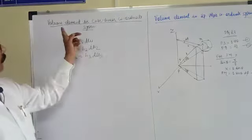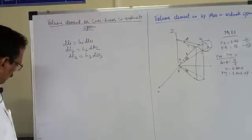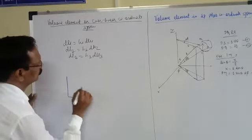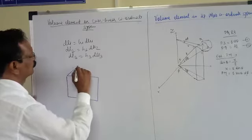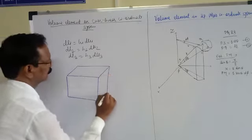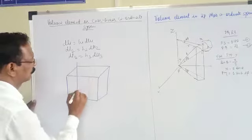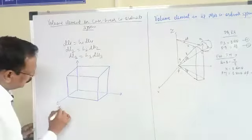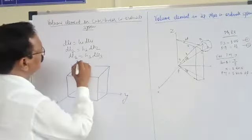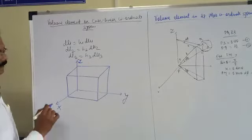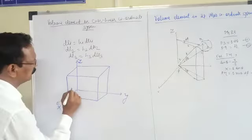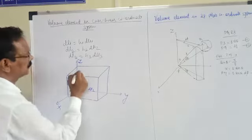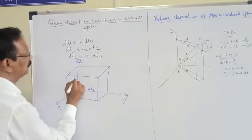So we have to see what the volume element is. First we have to draw the figure. This is your x-axis, this is the y-axis, and this is the z-axis. The distance along x-axis is dL1, the distance along y-axis is dL2, and the distance along z-axis is dL3.